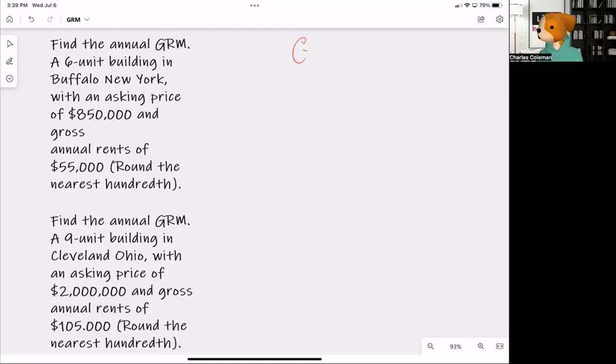your gross rent multiplier equals your purchase price divided by gross rental income. So as we're looking at this, this is how you would break this down.